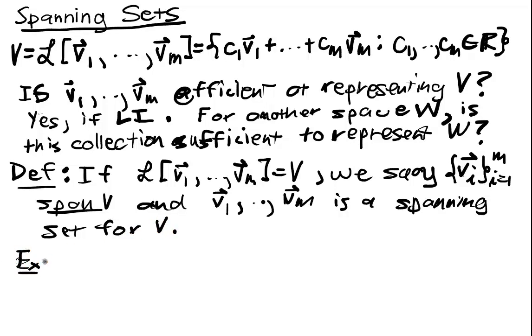A quick example, let's take all linear combinations of (1,0) and (0,1). Well that's equal to C1(1,0) plus C2(0,1), where C1 and C2 range over all real numbers.